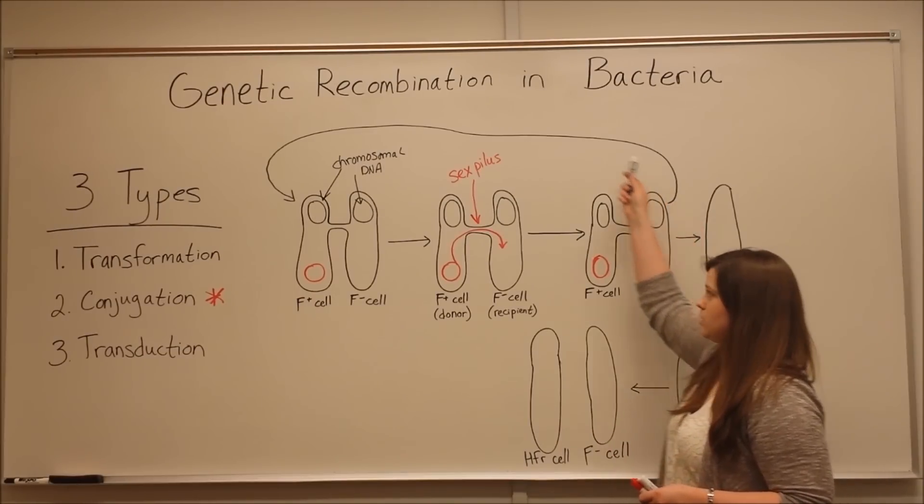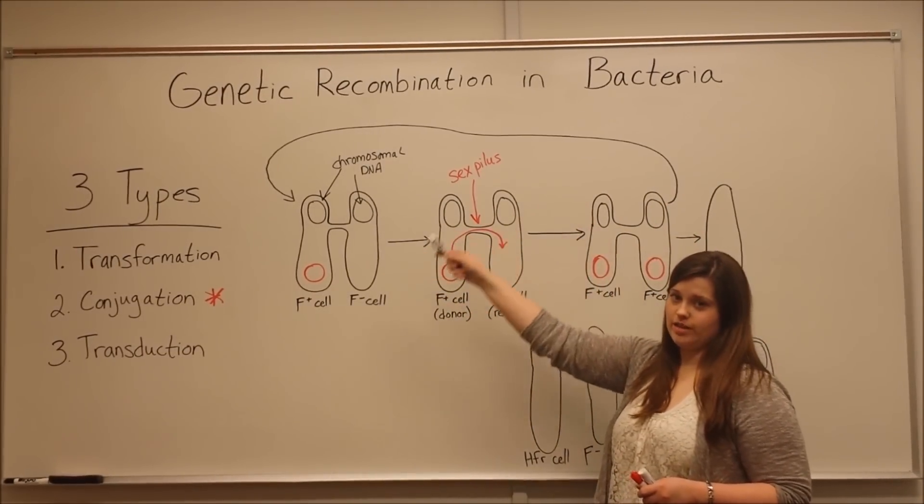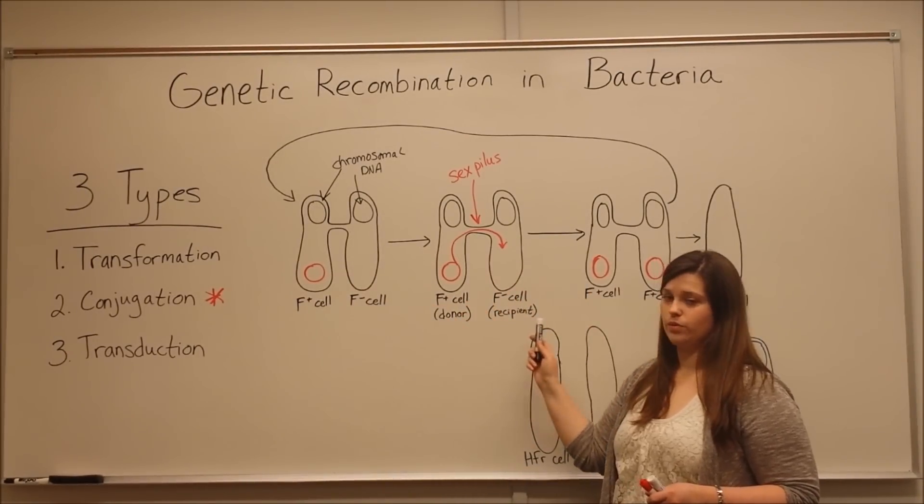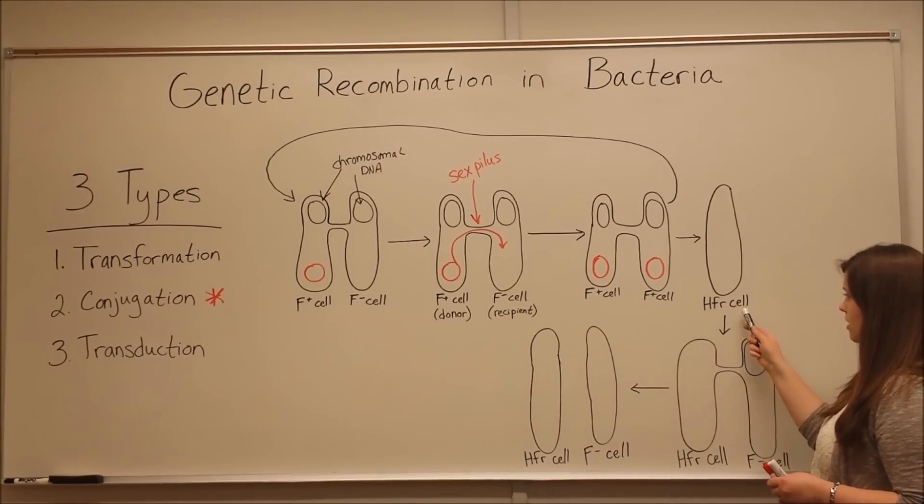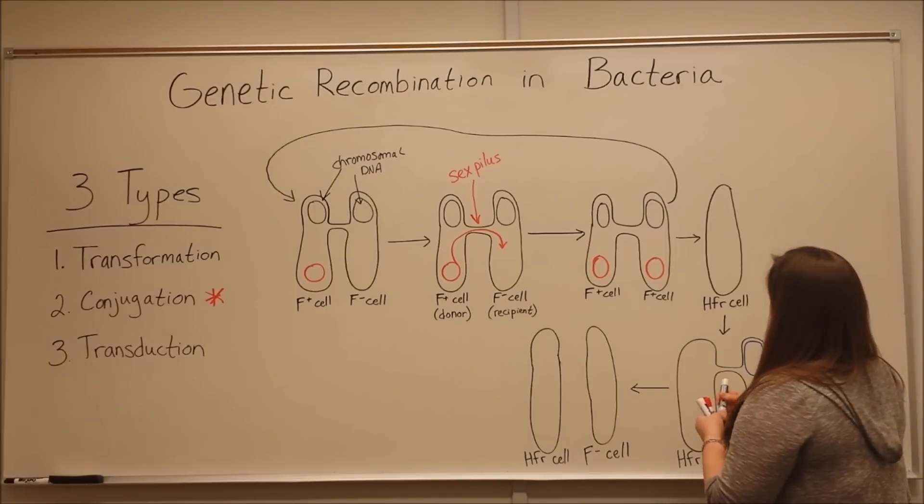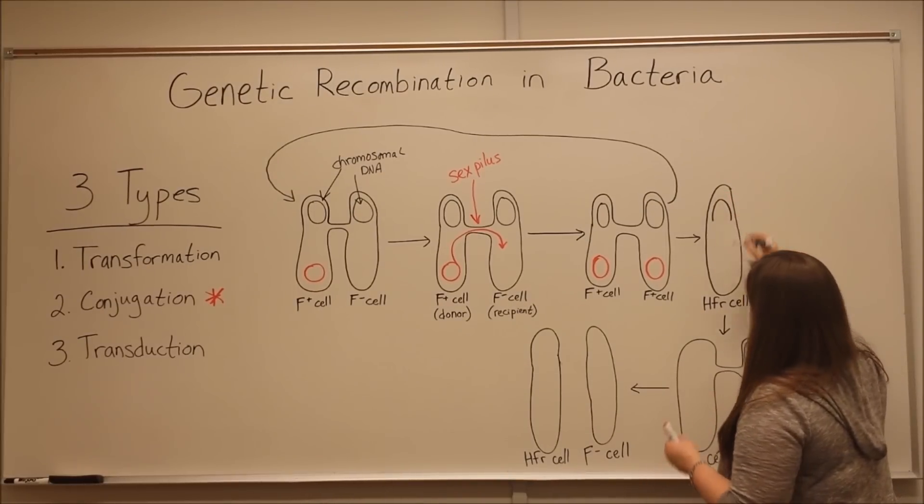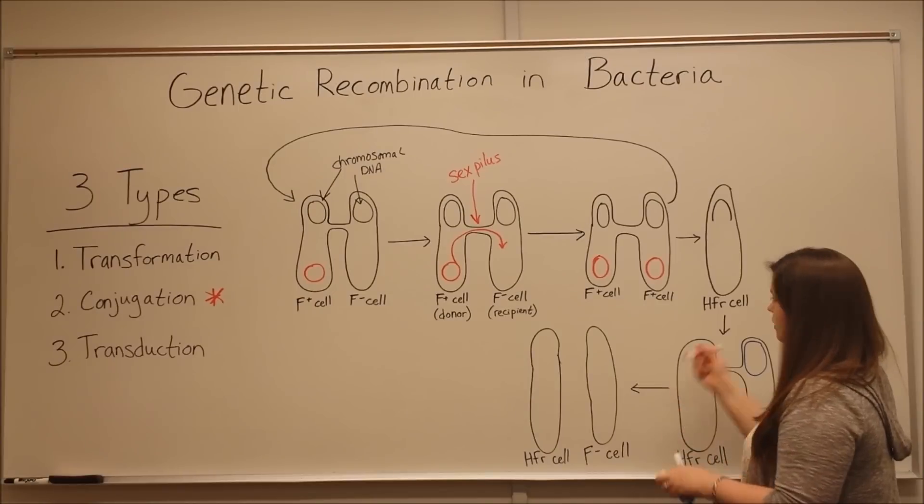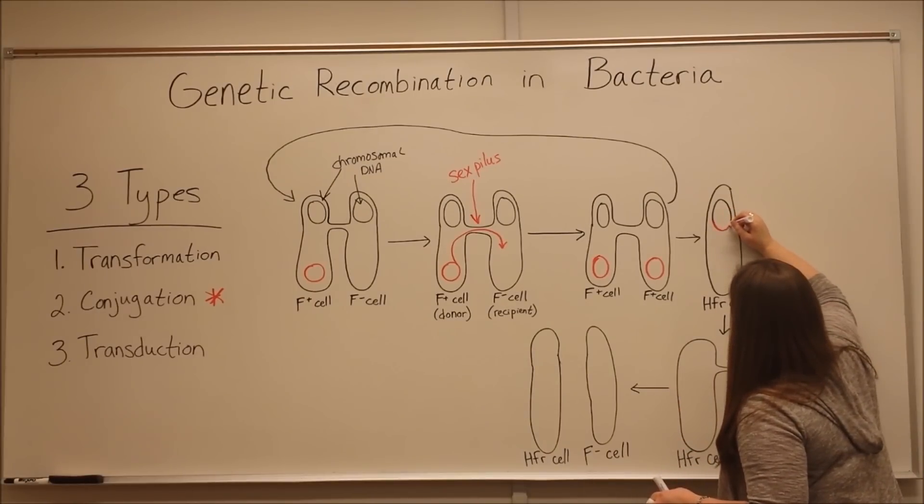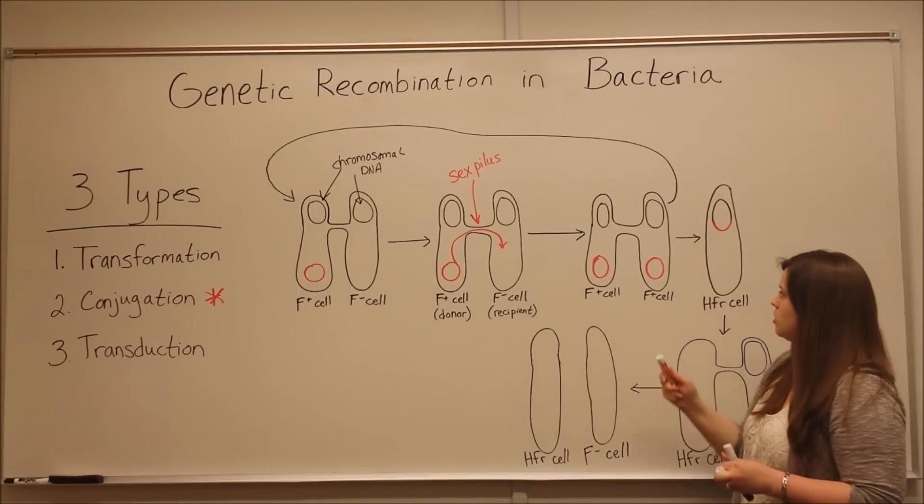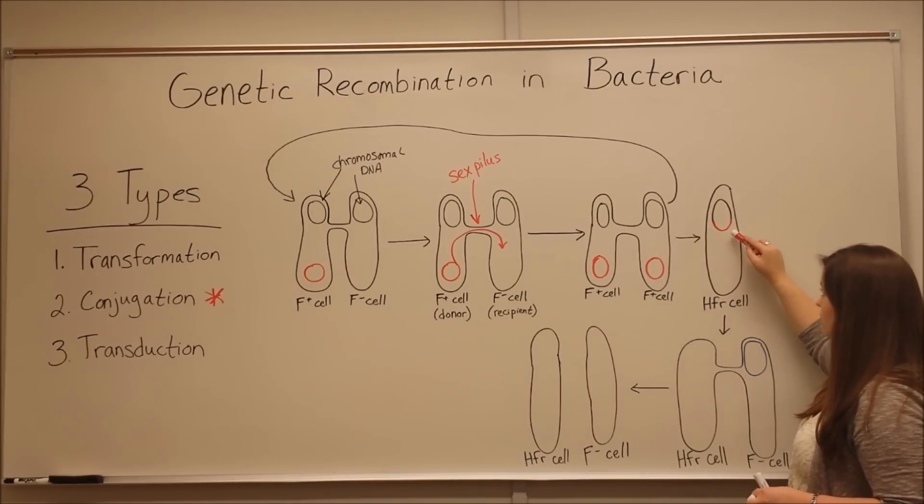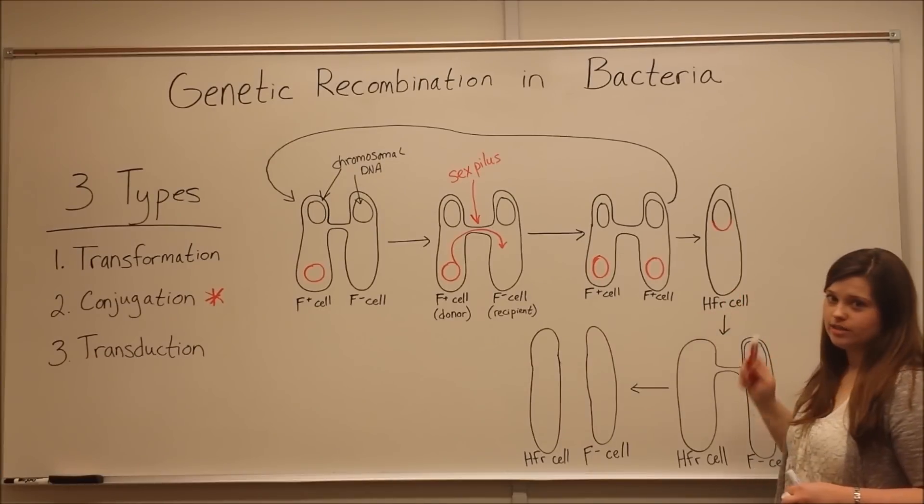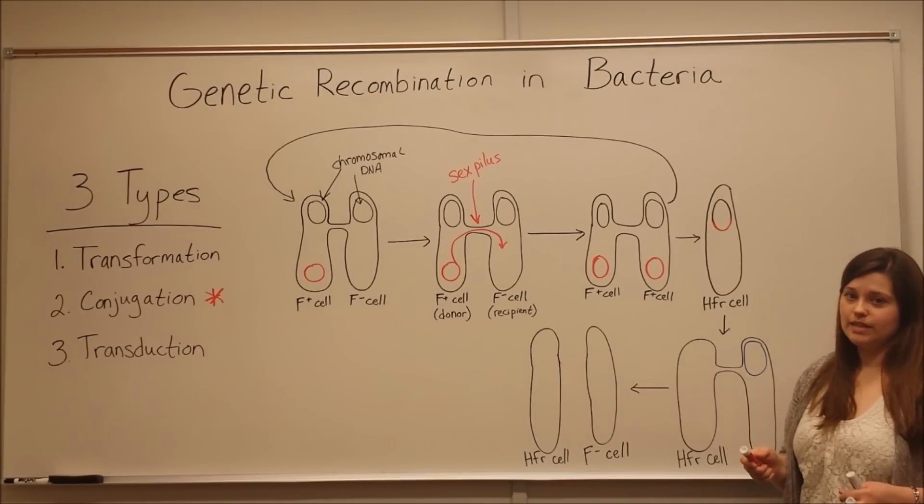In addition to continuing to share genes with other F-minus cells through conjugation, something else can happen. The chromosomal DNA can allow the fertility plasmid DNA to integrate into the chromosome. When the fertility plasmid integrates into the bacterial chromosome, this cell is called an HFR cell, which stands for High Frequency of Recombination.